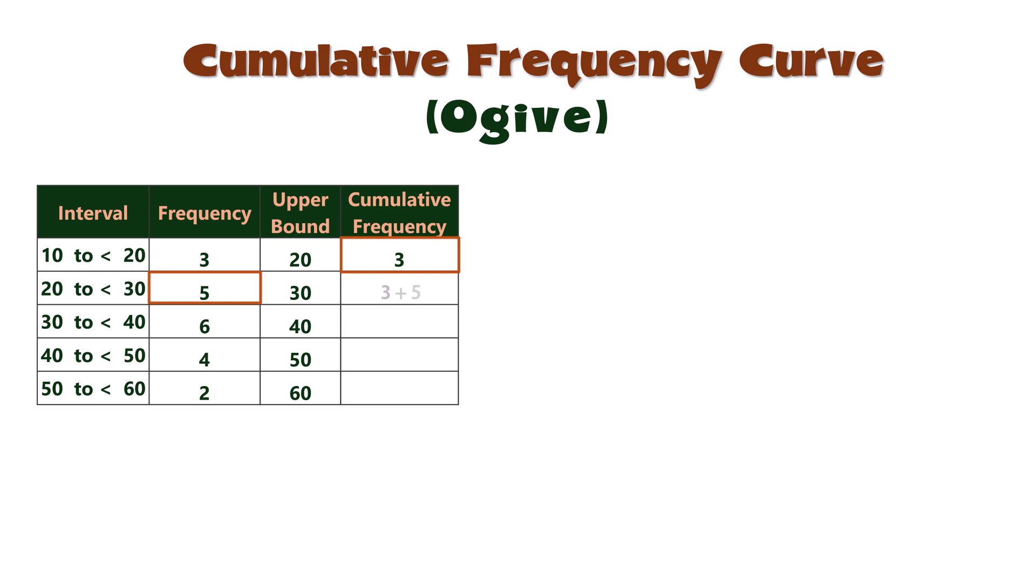That is, 3 plus 5 equals 8 for the second class, 8 plus 6 equals 14 for the third class, 14 plus 4 equals 18 for the fourth class, and 18 plus 2 equals 20 for the last class. Note that the cumulative frequency for the last class is the total frequency for the distribution.